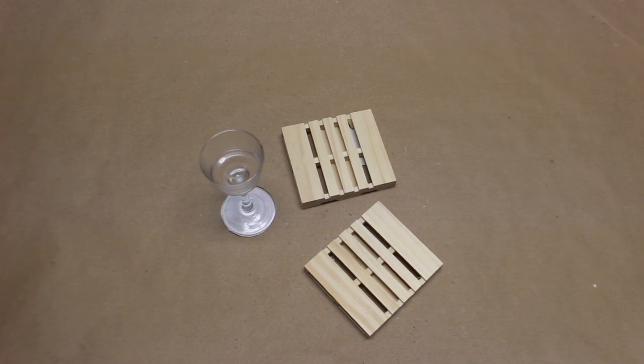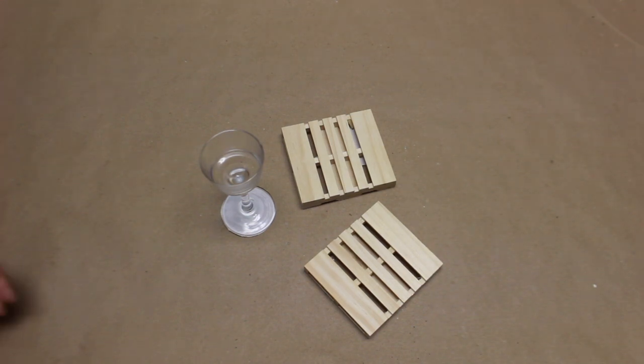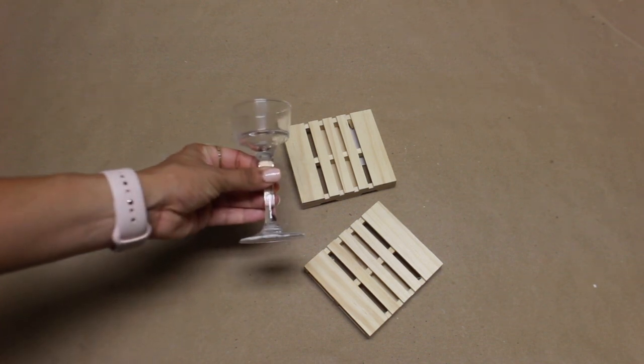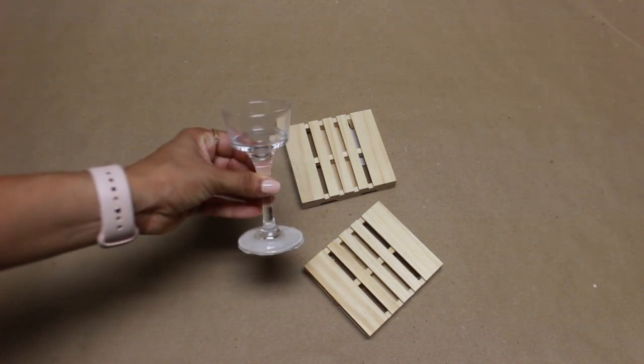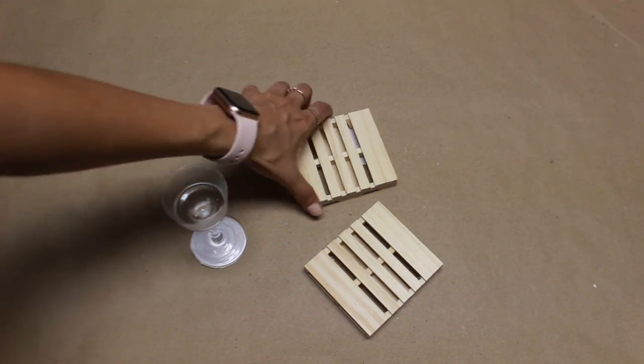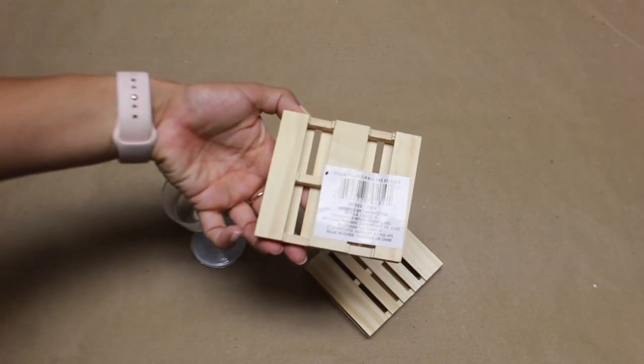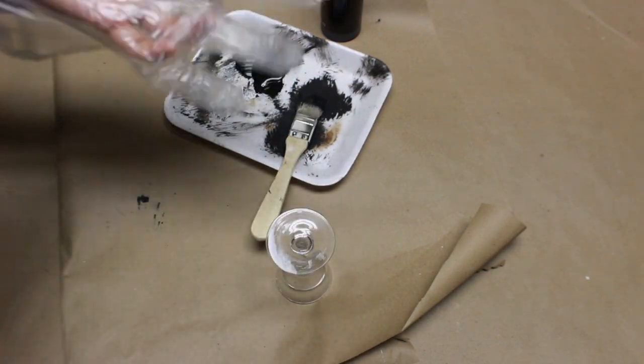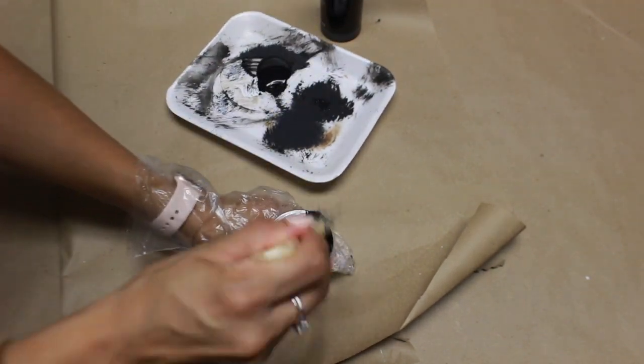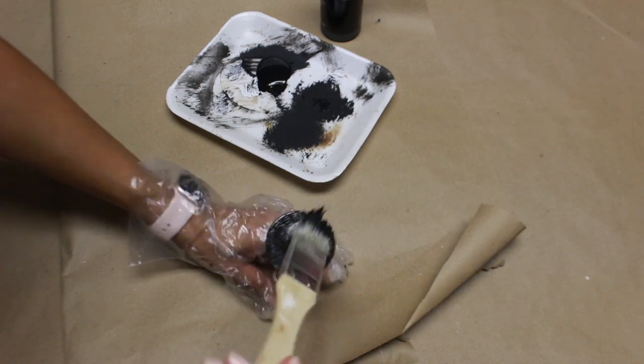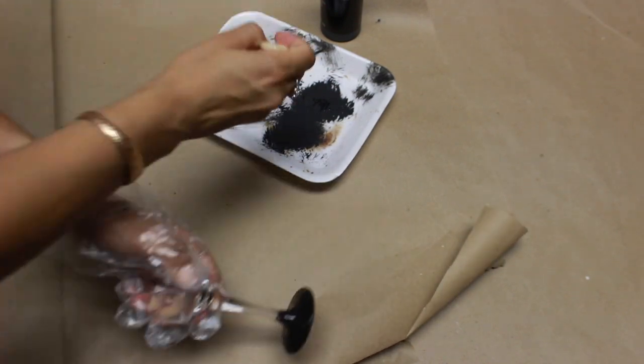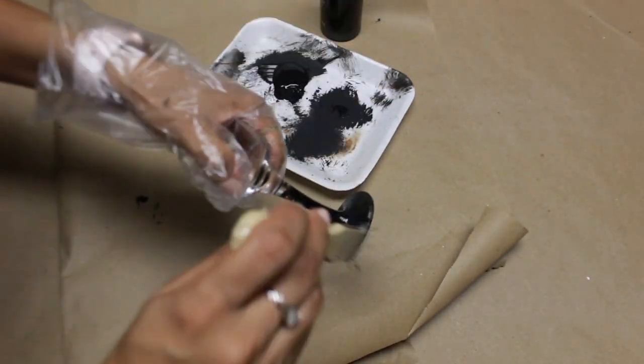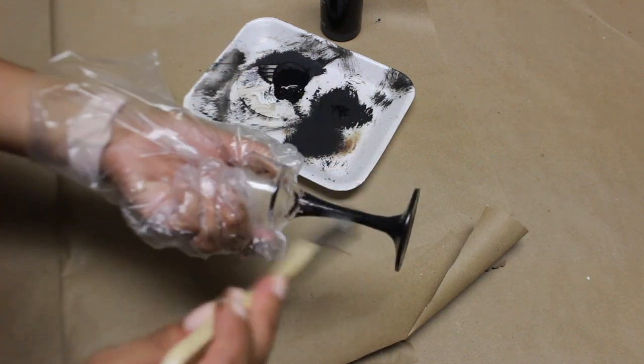This next one, we're using these Dollar Tree items. I have two palettes. These are a little different than the previous DIY. These are more of a square shaped. The other one was more of like a rectangular shape and the small candlestick. So I'm going to paint the candlestick black. I forgot to mention earlier when I used this paint, this is the matte apple barrel paint from Walmart.